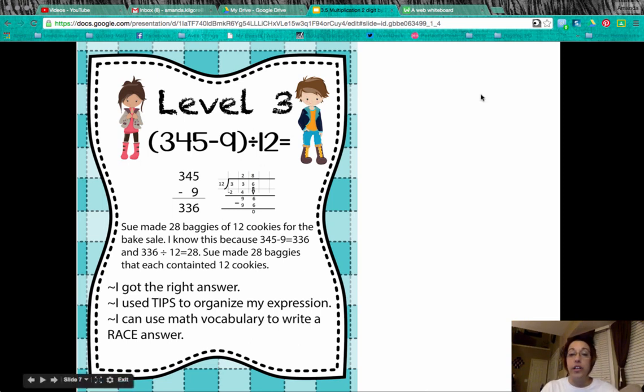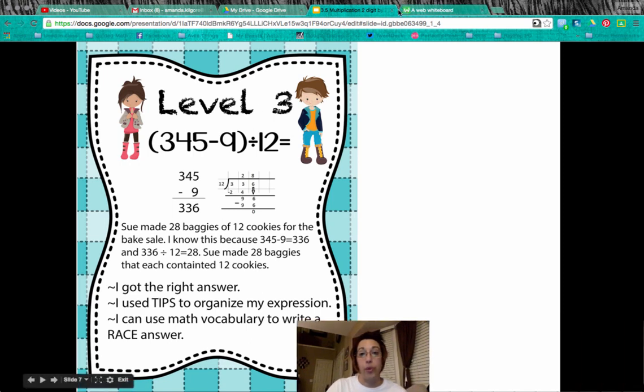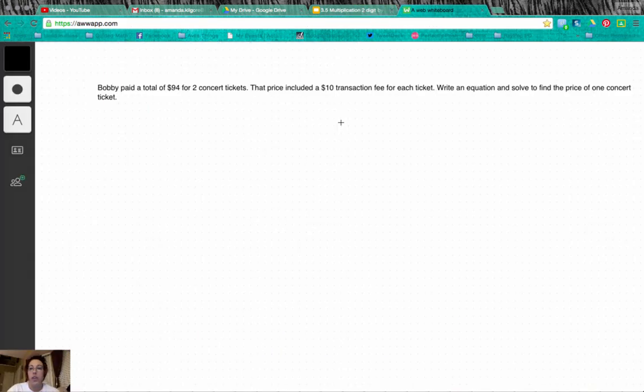So let's look at another example of a word problem and how we can use tips and race to solve and get our level three. In this example, we have Bobby who paid a total of $94 for two concert tickets. Each price included a $10 transaction fee for each ticket. Write an equation and solve to find the price of one concert ticket.